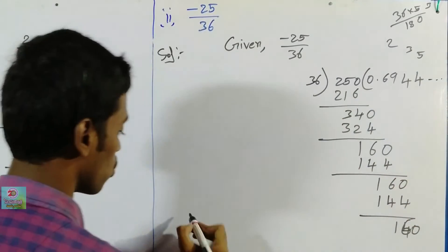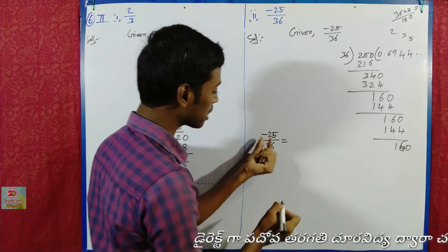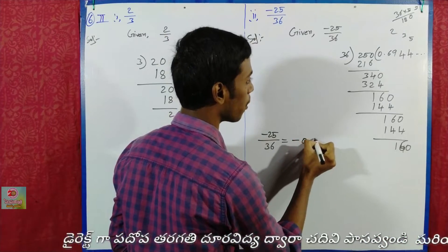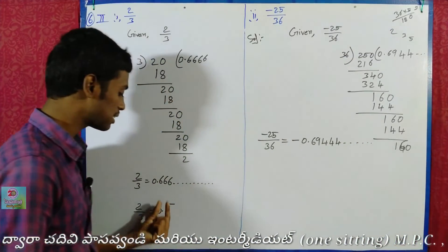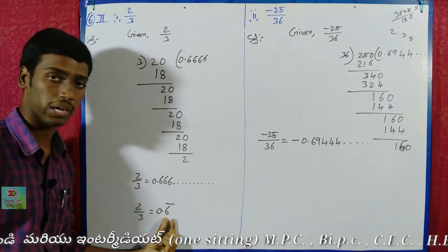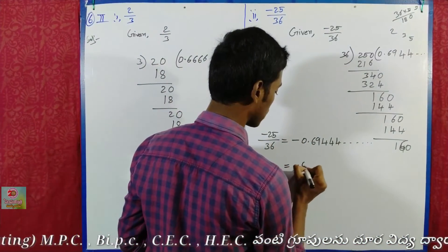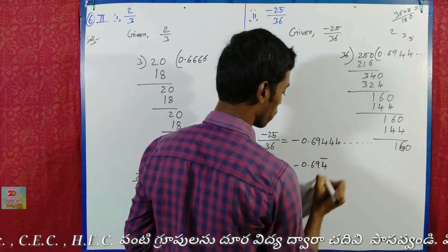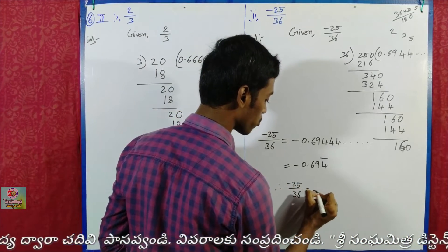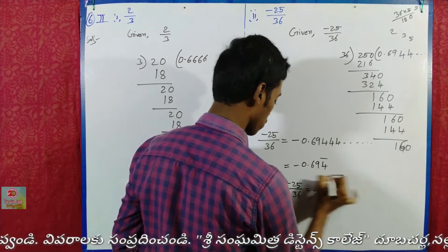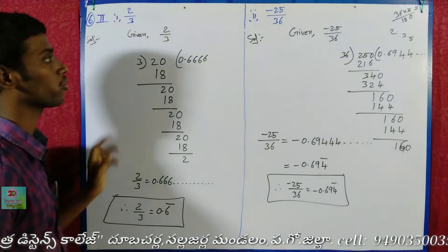If 6 is equal to the answer, we will have a minus here. It will be minus 0.694 and 4 will be repeated. If 6 is repeated, we get 6.5̄ and 4.5̄. Therefore, minus 25 by 36 is equal to minus 0.694̄. Therefore, 2 by 3 is equal to 0.6̄.